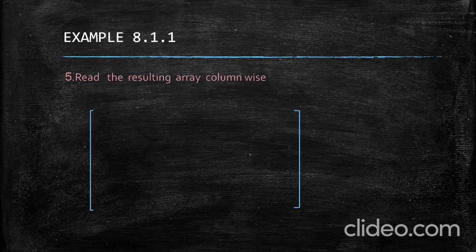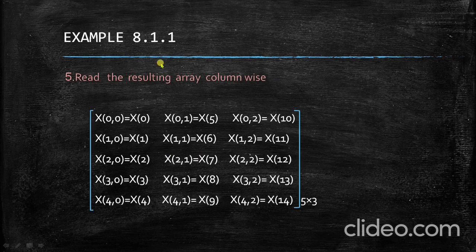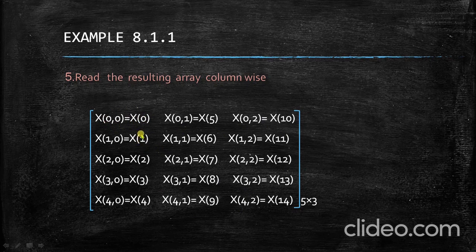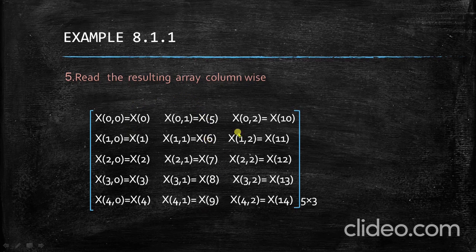The next step is to read the resulting array column-wise. As you can see, this is the obtained transformation signal matrix. We consider the first element as capital X(0), and the second element capital X(1) is taken from the next row — X(1), X(2), X(3), X(4). Once the column is completed, we go to the next column: capital X(5), X(6), and so on up to X(14). This is called storing capital X of K column-wise, giving us the required transformation signal matrix.